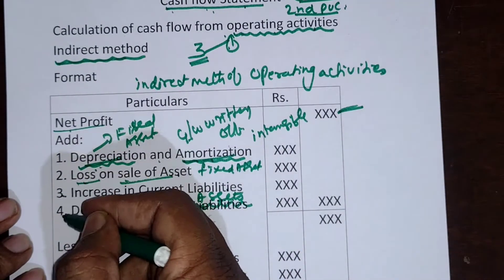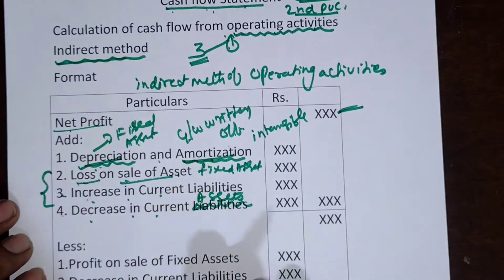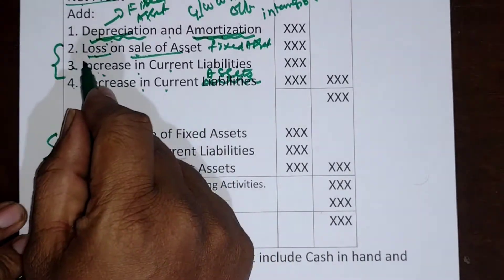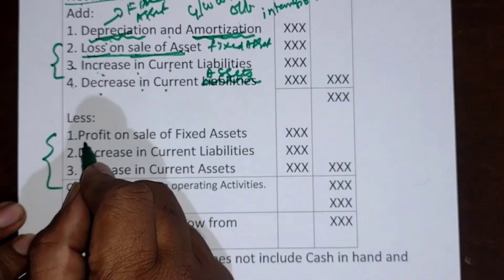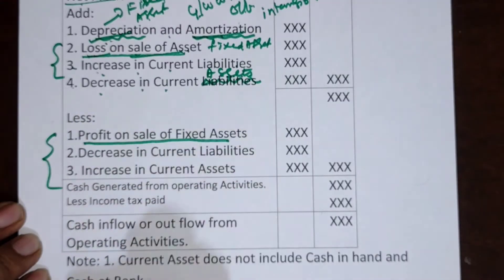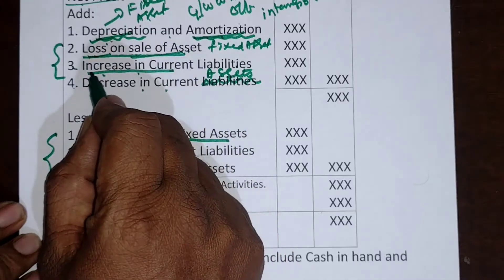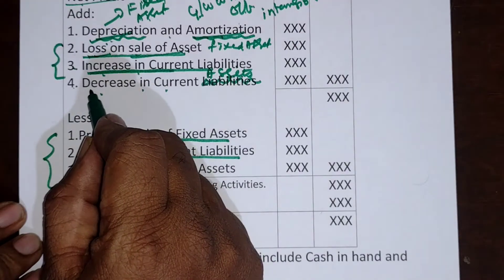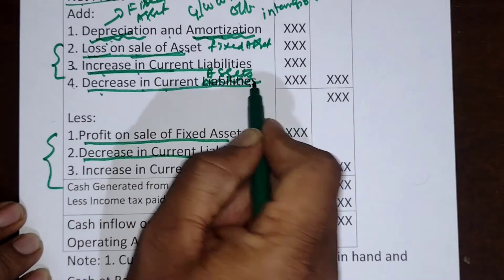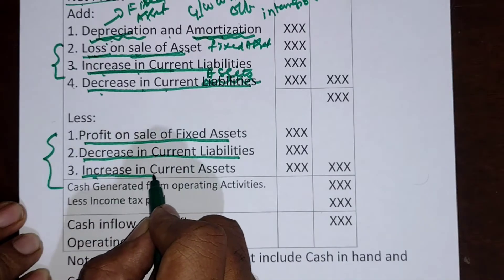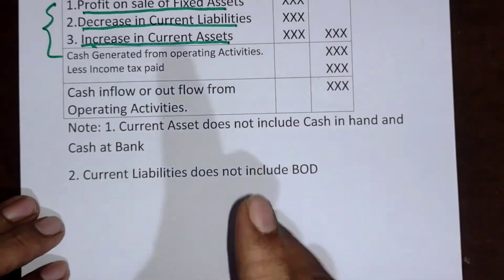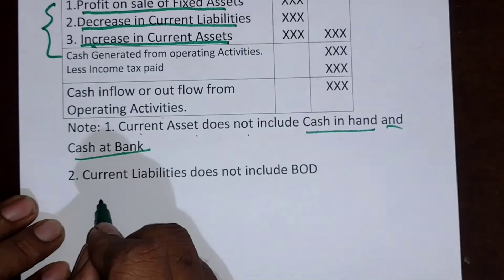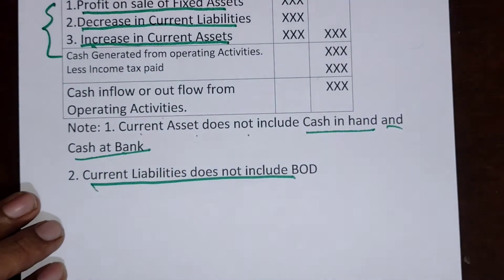Serial numbers 2, 3, and 4 — if you observe, the same items but opposite appear under the 'less' items. The second item is loss on sale of asset; the opposite here is profit on sale of asset. Increase in current liabilities in add items; decrease in current liabilities in less items. Decrease in current assets in add items; increase in current assets in less items. Note that current assets do not include cash in hand and cash at bank, and current liabilities do not include bank overdraft.